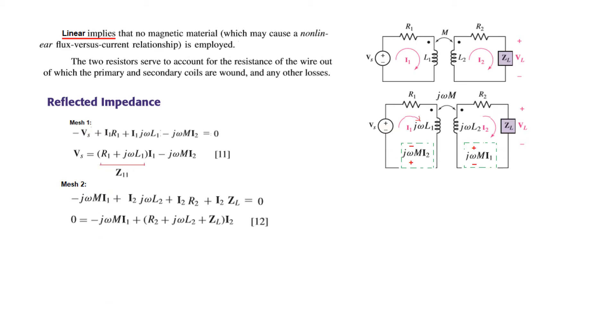This term is represented by Z11, the impedance on the primary side. This term is called the impedance on the secondary side, given the name Z22. From equations 11 and 12, we can write Vs equals Z11 I1 minus j omega m I2, and zero equals minus j omega m I1 plus Z22 I2.